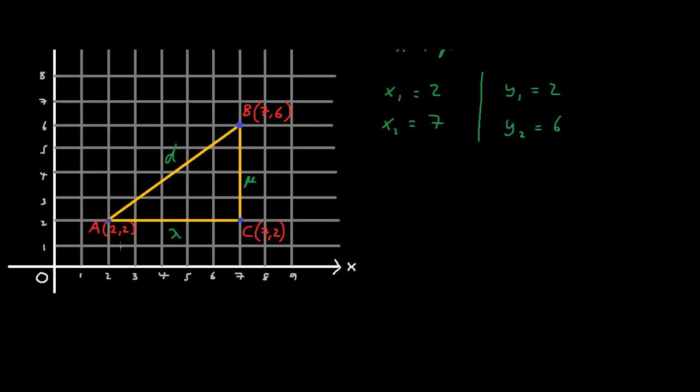Looking at this diagram you can already tell what lambda is. This length starts at x equals 2 and ends at x equals 7. So lambda by looking at this diagram equals 5 which equals 7 minus 2. If that is the case lambda equals x2 minus x1 which equals 7 minus 2 which equals 5.